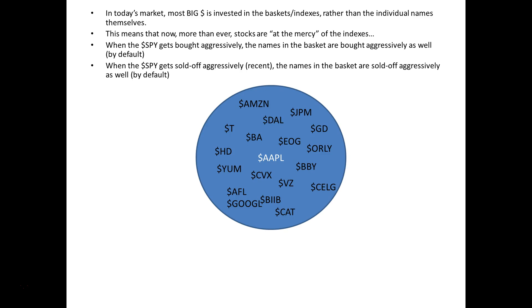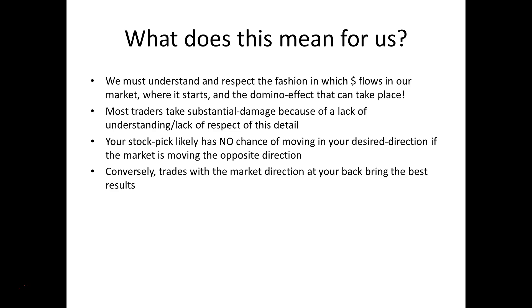Let's say I'm a hedge fund and I buy one billion dollars worth of the SPY. What's really happening is that my billion dollars is going out to some Amazon, a little JP Morgan, O'Reilly, Best Buy, Verizon, Caterpillar, Google, Aflac — it gets divvied out between all the individual names in that basket. And the same thing: when the market gets sold off, the names in that basket are sold off aggressively as well.